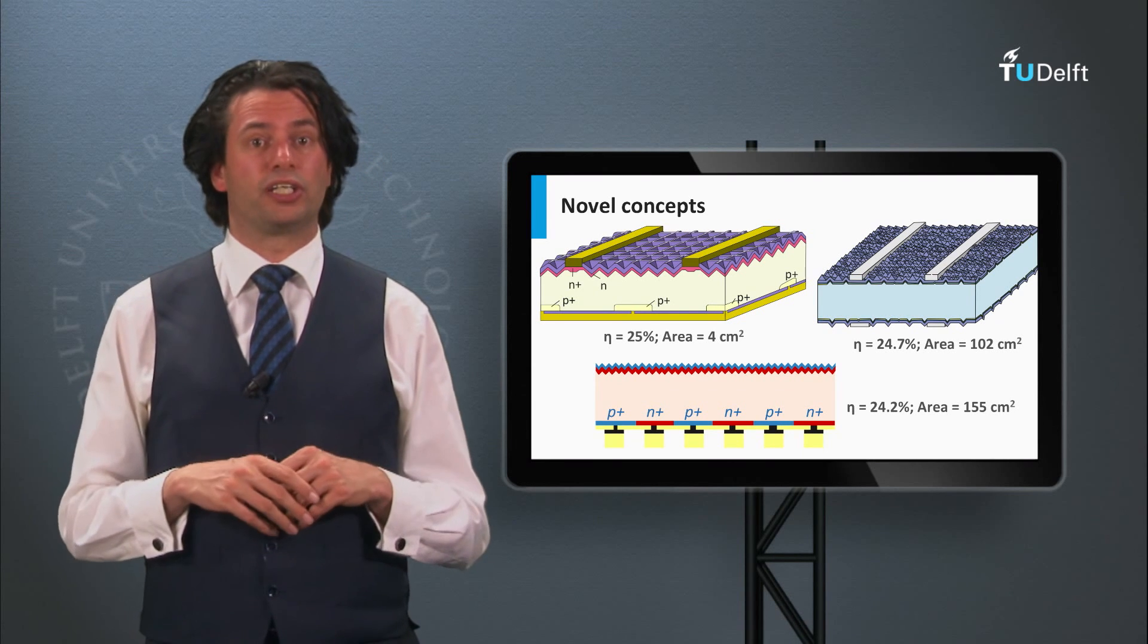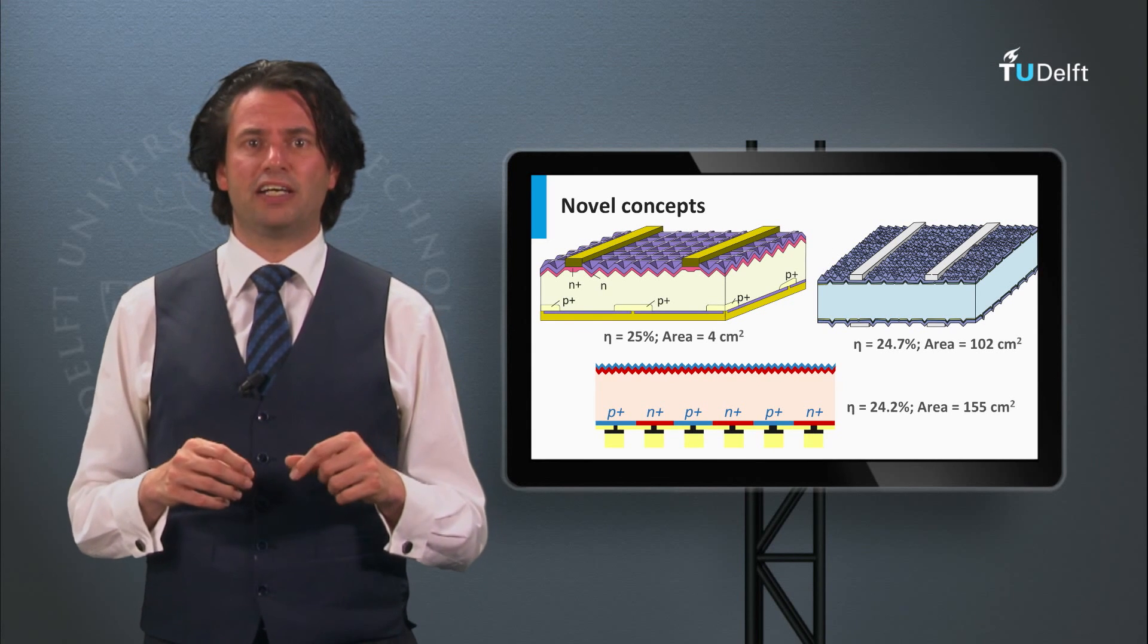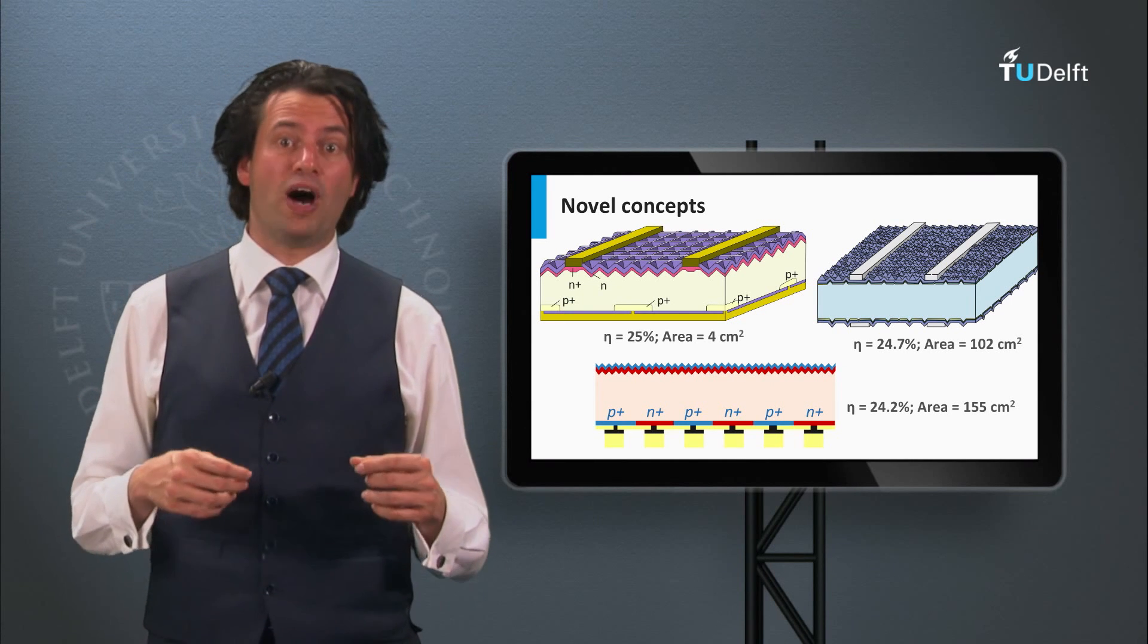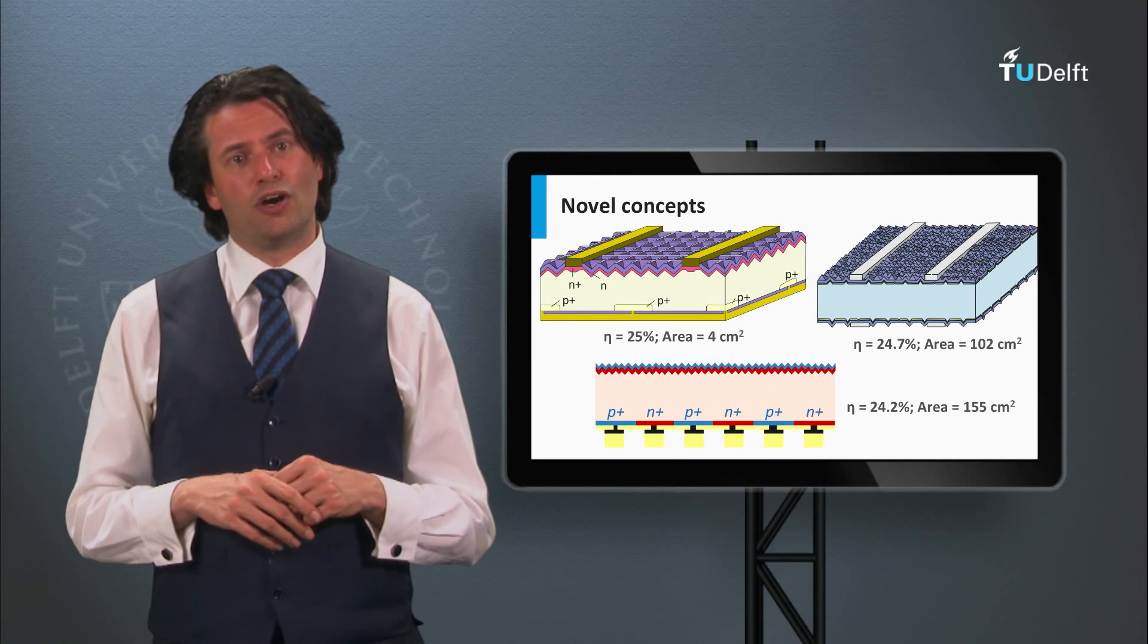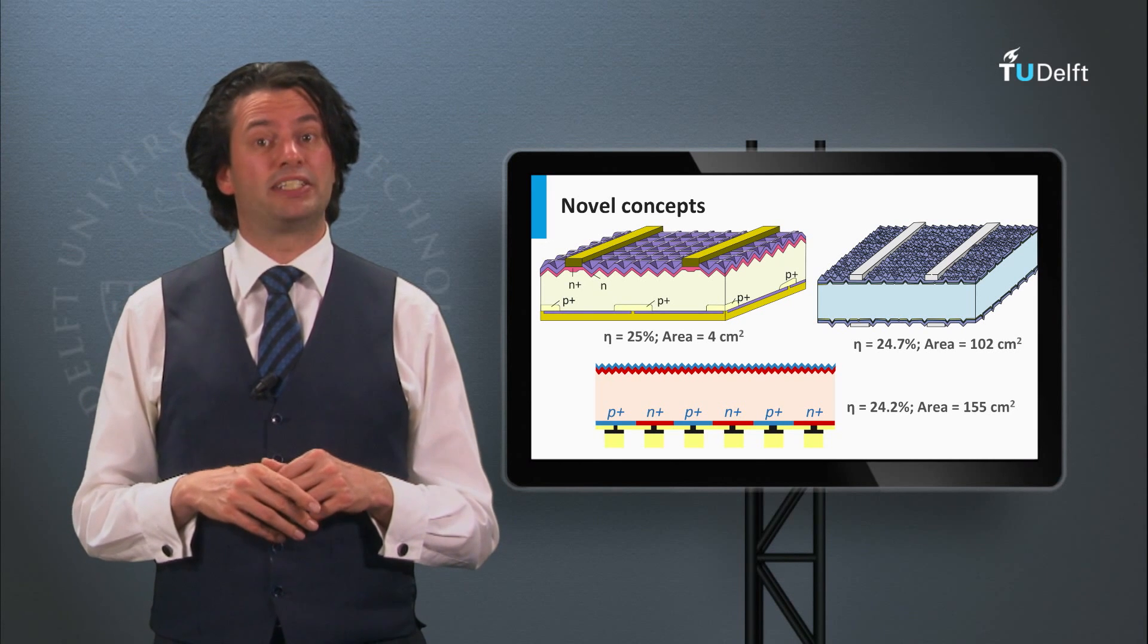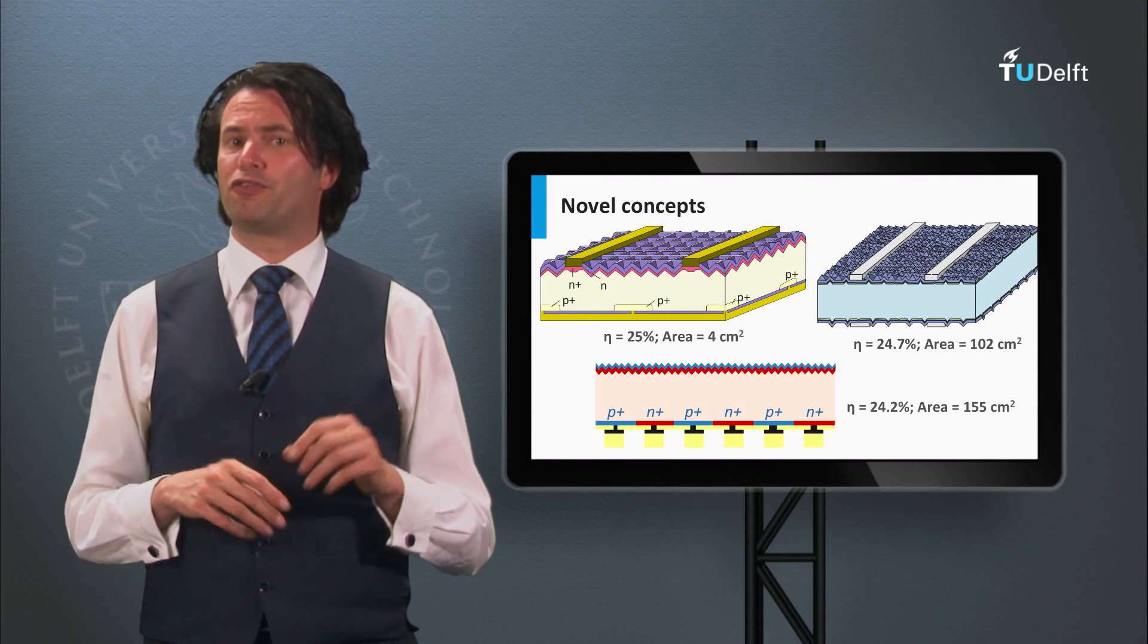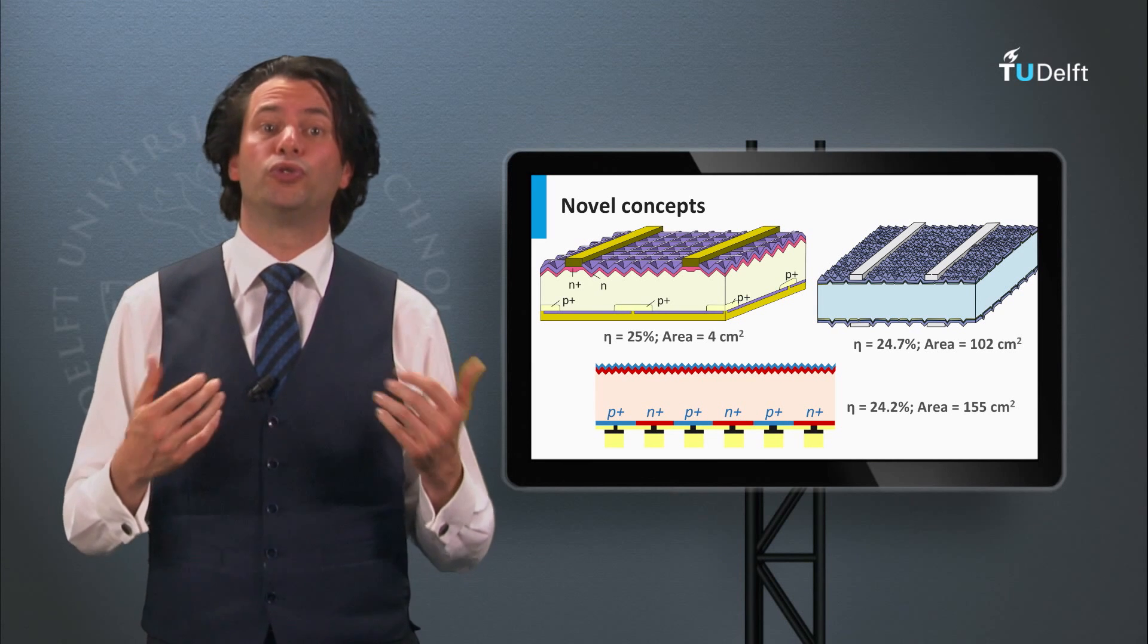The record efficiency for an interdigitated crystalline silicon solar cell has been achieved by SunPower. They achieved an efficiency of 24.2% on a wafer size of 155 square centimeters. Finally, for the crystalline silicon heterojunction solar cell, Panasonic achieved an efficiency of 24.7% on a wafer size of 102 square centimeters.